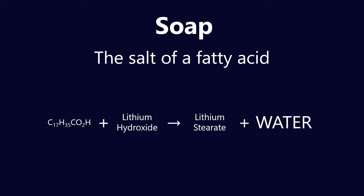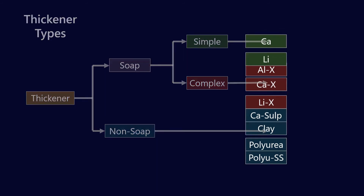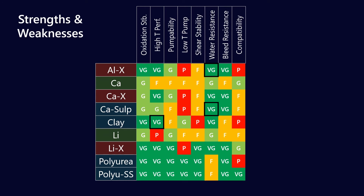Stearic acid has its chemical formula and lithium hydroxide has its formula — that's how they go together to form the thickener. Going back to our thickener types: soaps are salts of a fatty acid. We distinguish between simple and complex soaps because complexes have a complexing agent introduced that increases the amount of cross-linking between the fibers, giving them very different physical properties. Non-soap thickeners are manufactured in an entirely different process — not formed by the reaction of an acid and a base — and so they all impart quite different properties.